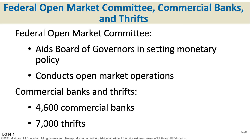The Federal Open Market Committee helps the Board of Governors decide what monetary policy is going to be and conducts open market operations. Open market operations means buying and selling government bonds. When the federal government buys government bonds, it can increase the money supply, and when they sell government bonds, it can decrease the money supply — all of that is carried out inside the Federal Reserve.